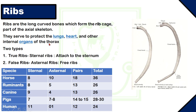Ribs are the long curved bones which form the rib cage, an important part of the axial skeleton. Ribs serve to protect the lungs, heart, and other internal organs of the thoracic cavity. There are two types of ribs: true ribs and false ribs. True ribs are also called sternal ribs, which are attached to the sternum. False ribs are also called asternal ribs — they are free to move and do not attach to the sternum. The number of ribs differs among animals: in horse, eight sternal and ten asternal ribs; in ruminants, eight sternal and five asternal; in canine, nine sternal and four asternal; in pigs, seven sternal and eight asternal; in humans, eleven sternal and one asternal rib.